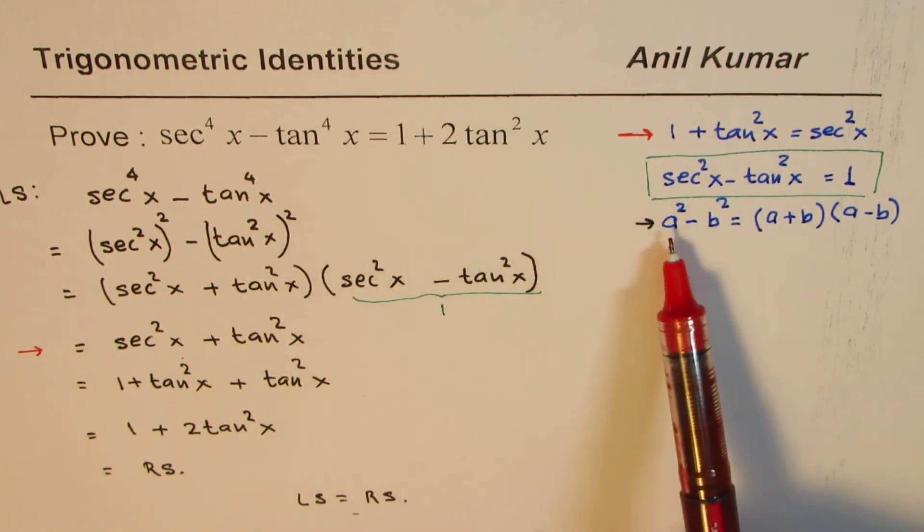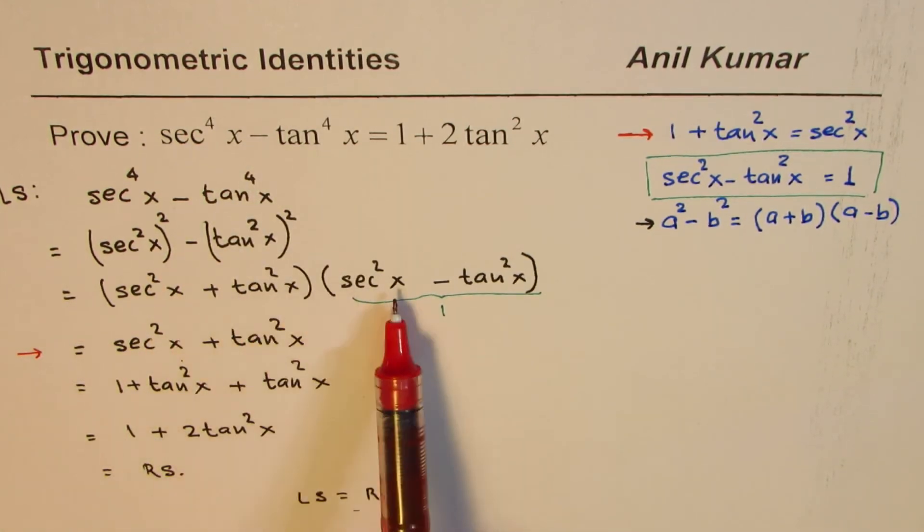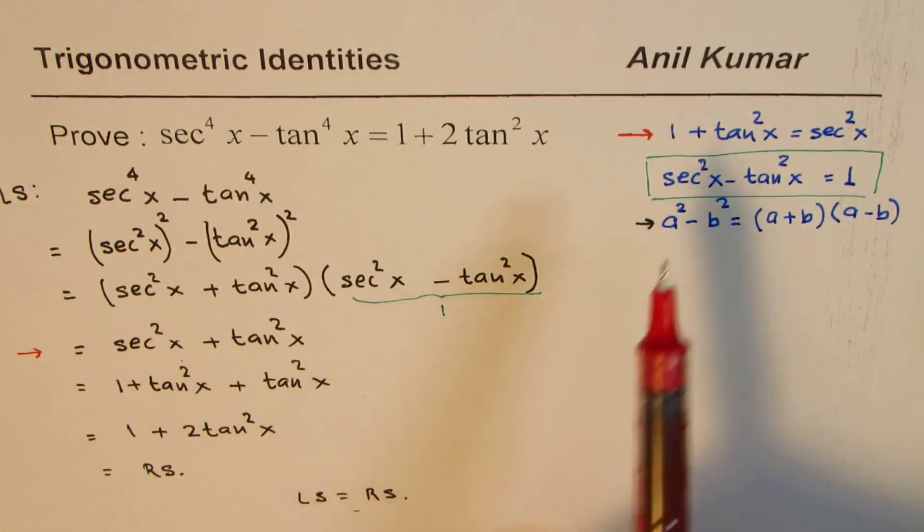So we try to utilize difference of squares formula to factor this. Once we factor, we applied the trigonometric identities.